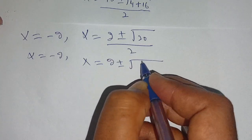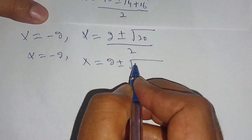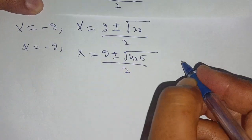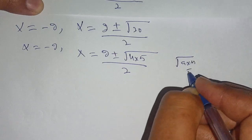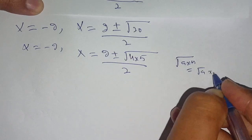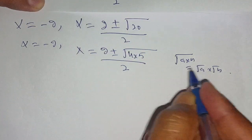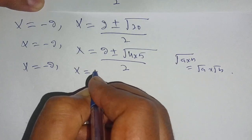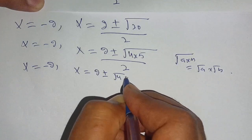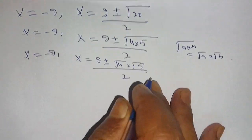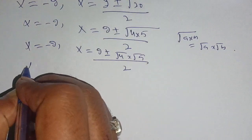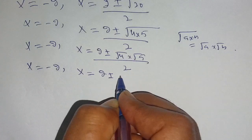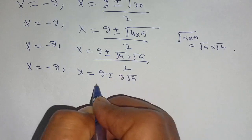Now 20 can be written as 4 times 5, so x is equal to 2 plus or minus the square root of 4 times 5, divided by 2. We know that the square root of a times b equals the square root of a times the square root of b. Applying this identity, x is equal to 2 plus or minus the square root of 4 times the square root of 5, divided by 2. Since the square root of 4 is 2, we get x is equal to 2 plus or minus 2 times the square root of 5, divided by 2.